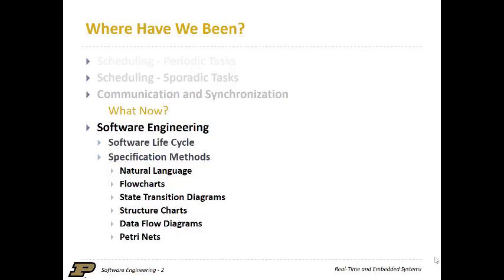We're going to start off talking a little bit about software lifecycle, but then the meat of this is specification methods specifically. Here are some of the ones we're going to be talking about: natural language, flowcharts, etc. What we're going to see is that these are broken into several types — we have informal methods, semi-formal methods, and then we actually have formal methods, which you can generate proofs on and that sort of thing. This is good from the standpoint of being able to really do verification and validation from software models.